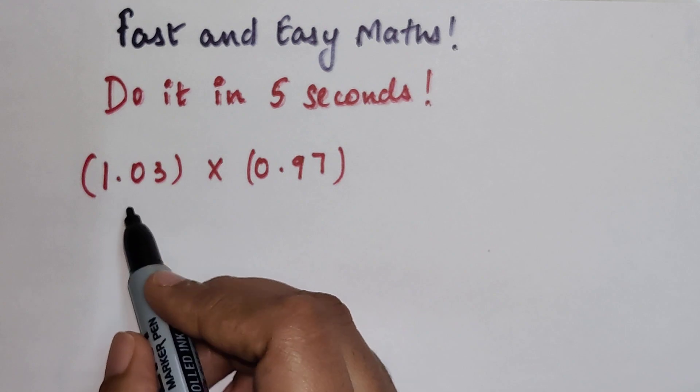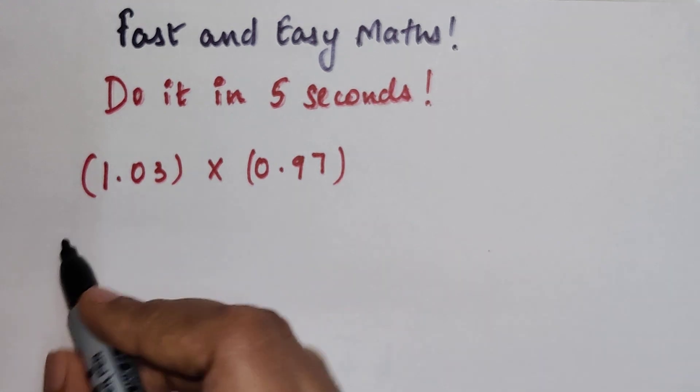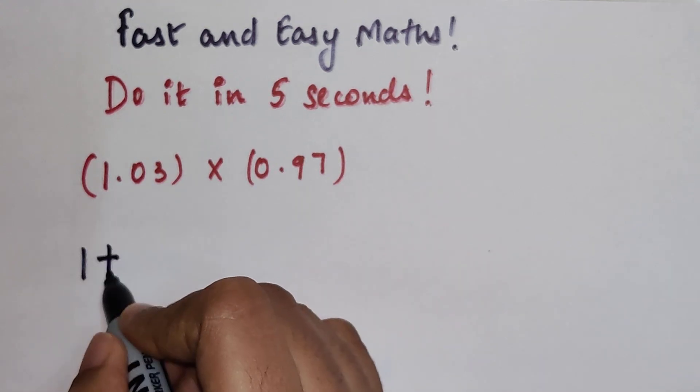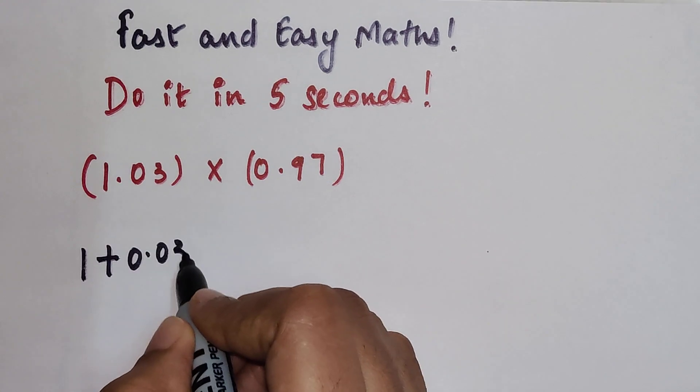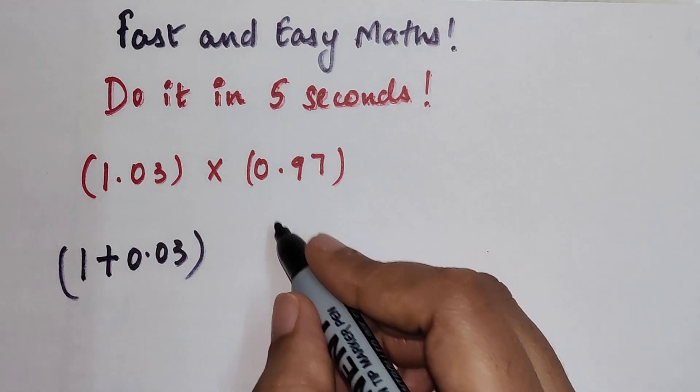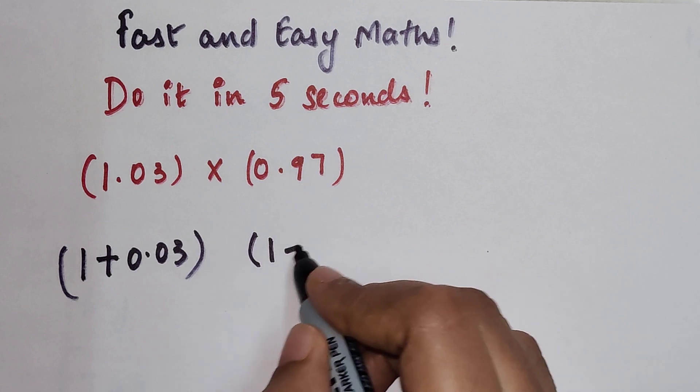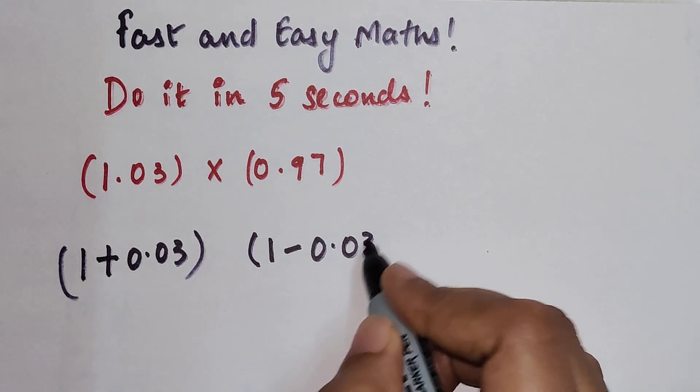So all you have to do is you just have to break them. So I can say that this can be written as 1 plus 0.03, which will get you 1.03. And this can be written as 1 minus 0.03.